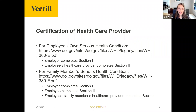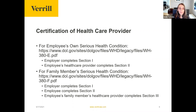There are two certification of healthcare provider forms, depending on the reason for leave. For the employee's own serious health condition, the employer completes section one and the employee's healthcare provider completes section two. For a family member's serious health condition, the form is largely the same, but section two is completed by the employee — denoting the relationship to the family member — and the family member's healthcare provider completes a new section three.